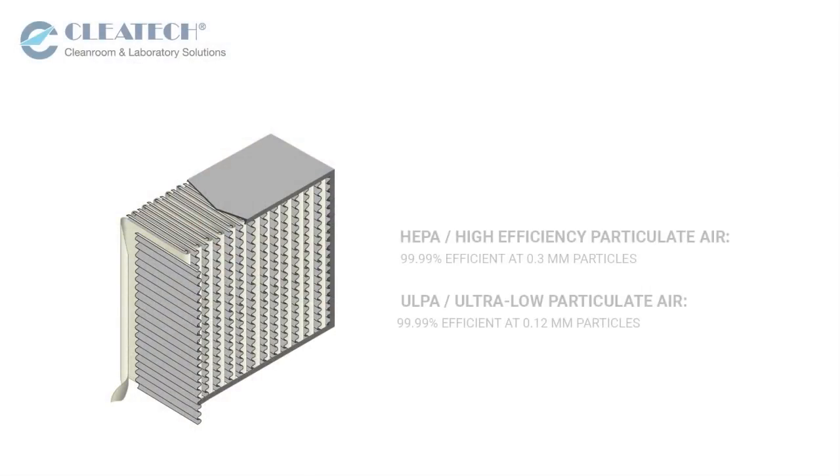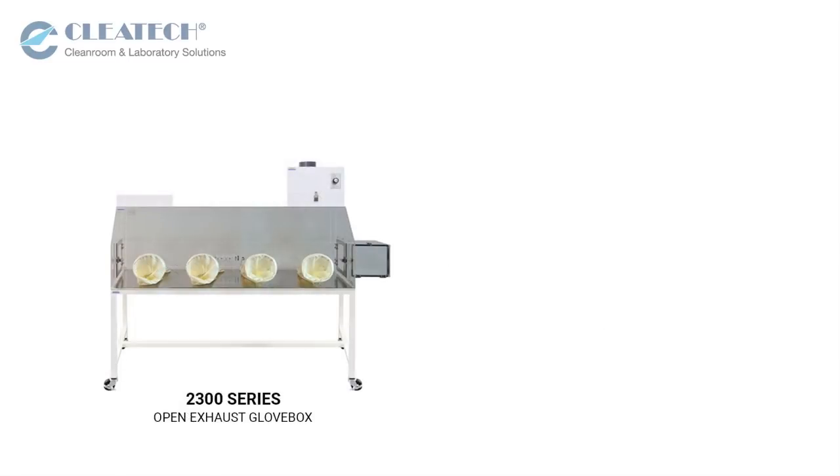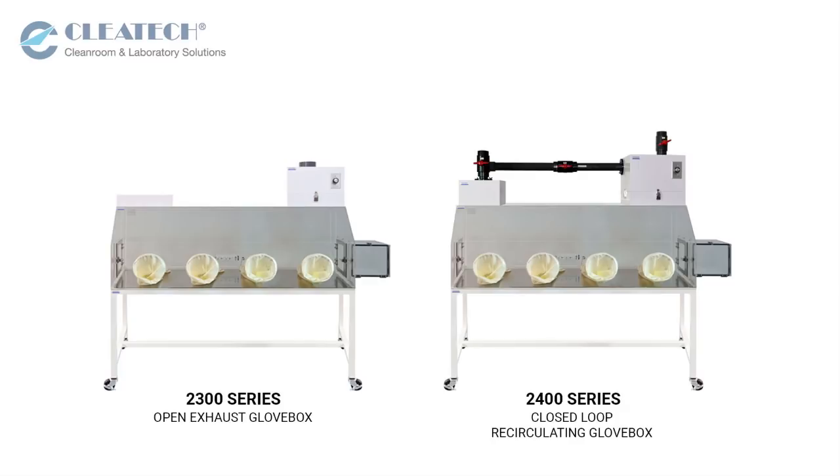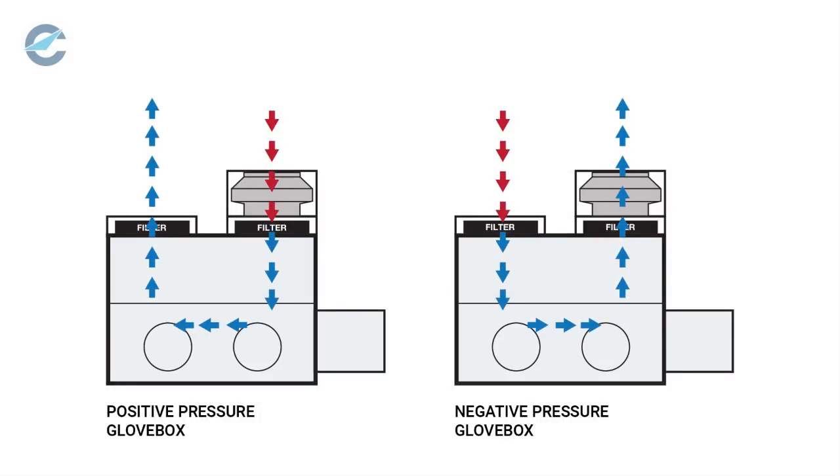Cletech offers HEPA and OLPA filtration in their 2300 series open exhaust glove boxes and 2400 series closed loop recirculating glove boxes. Both series can be configured into a positive or negative pressured system.